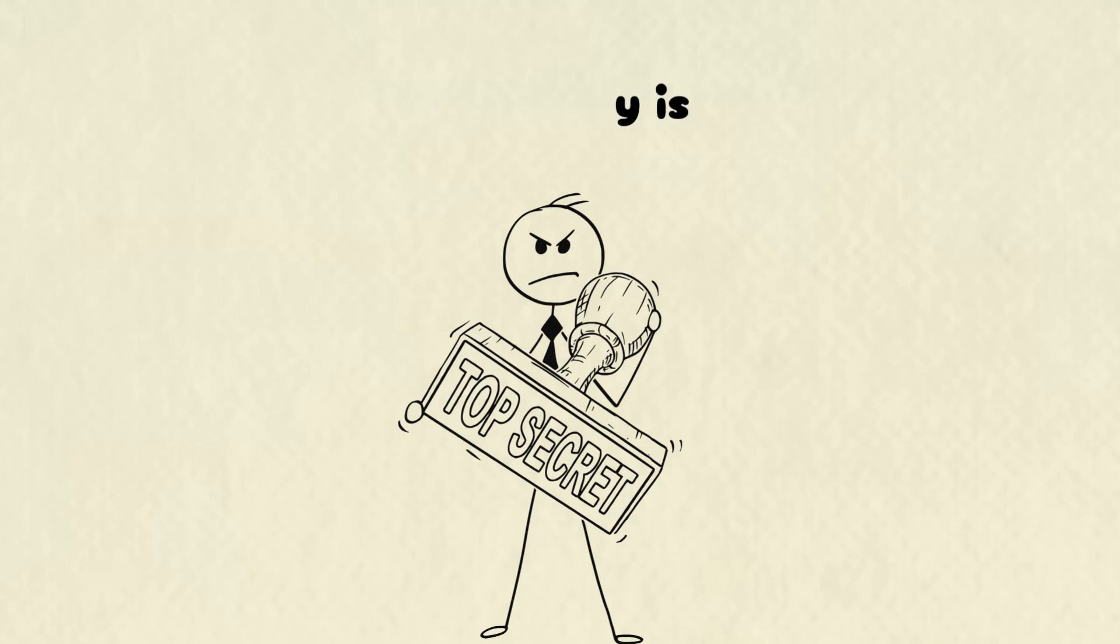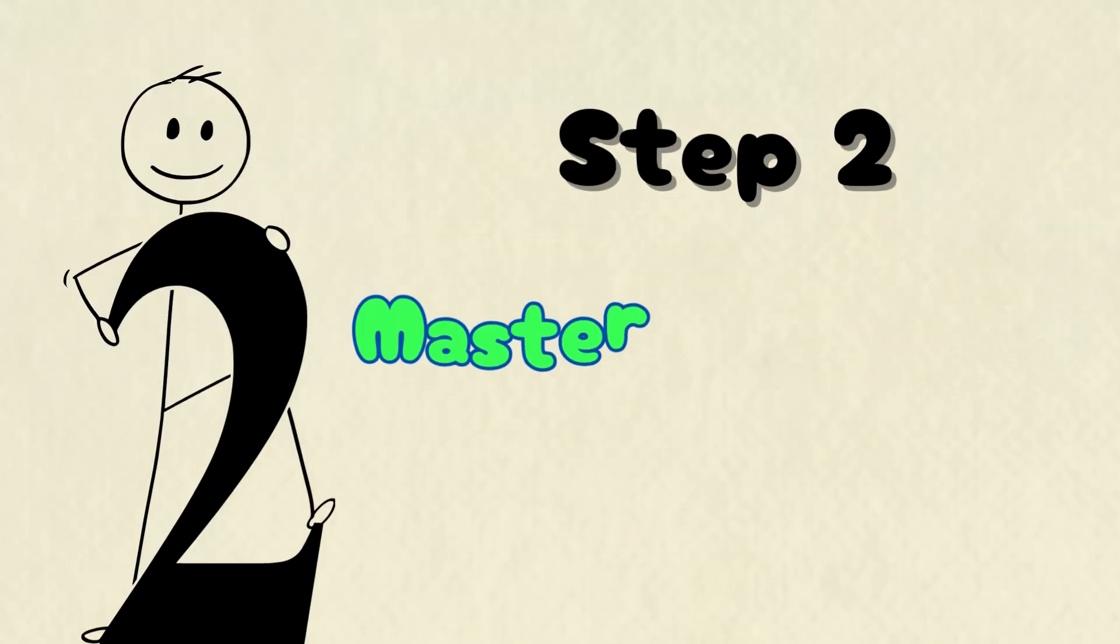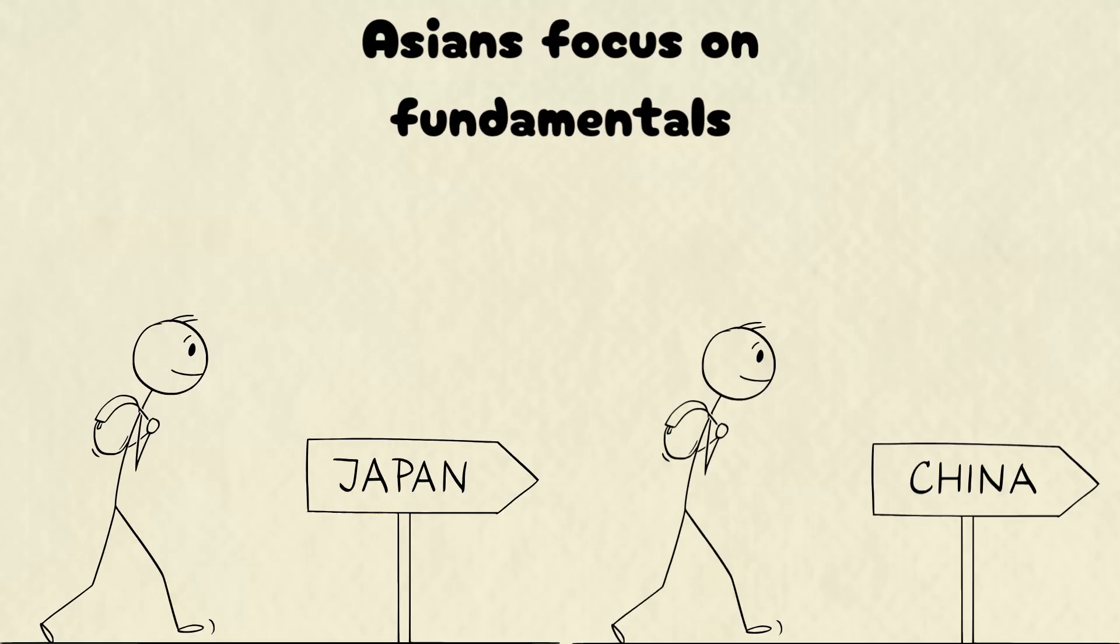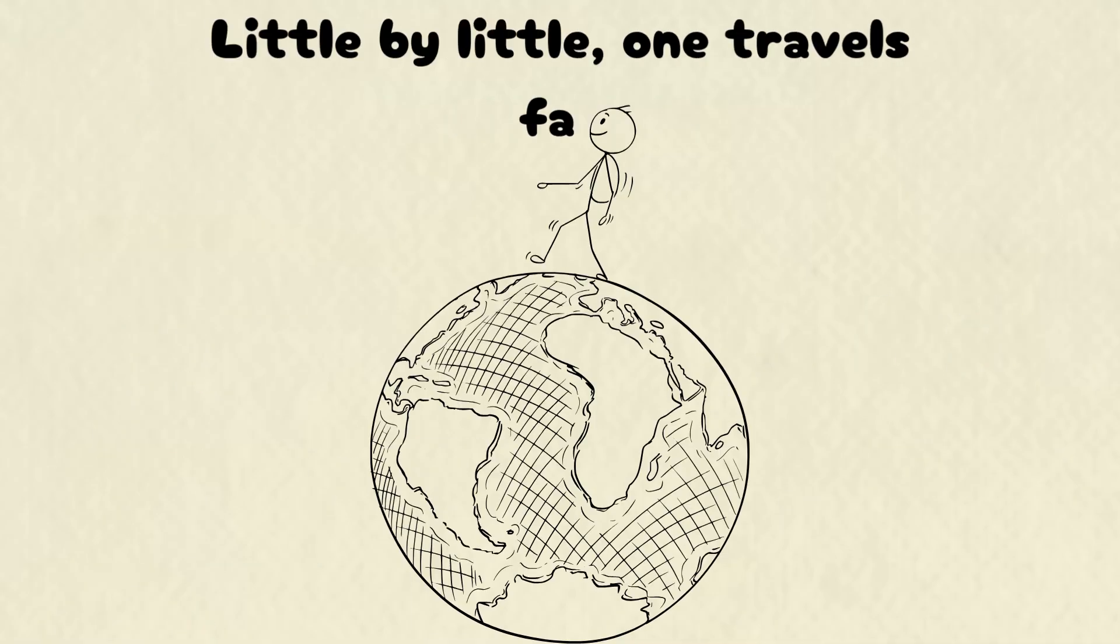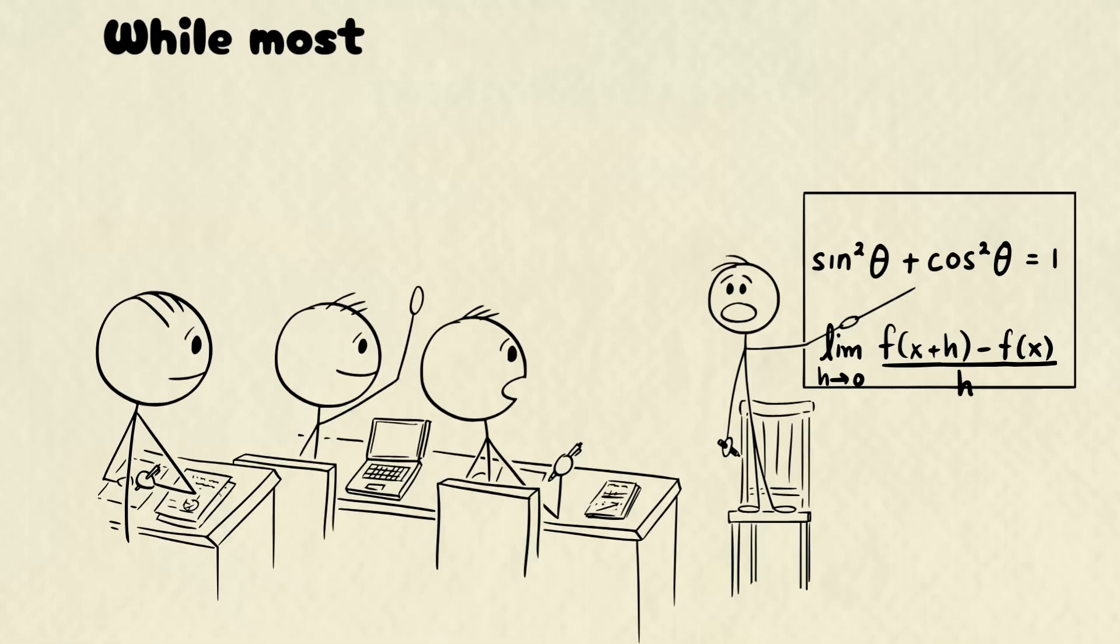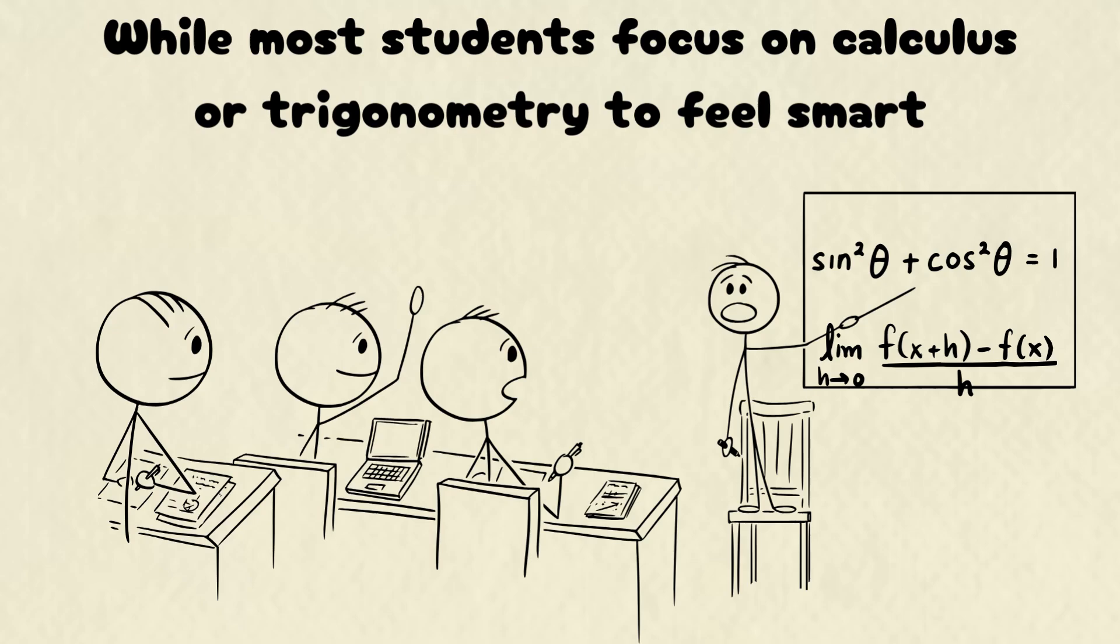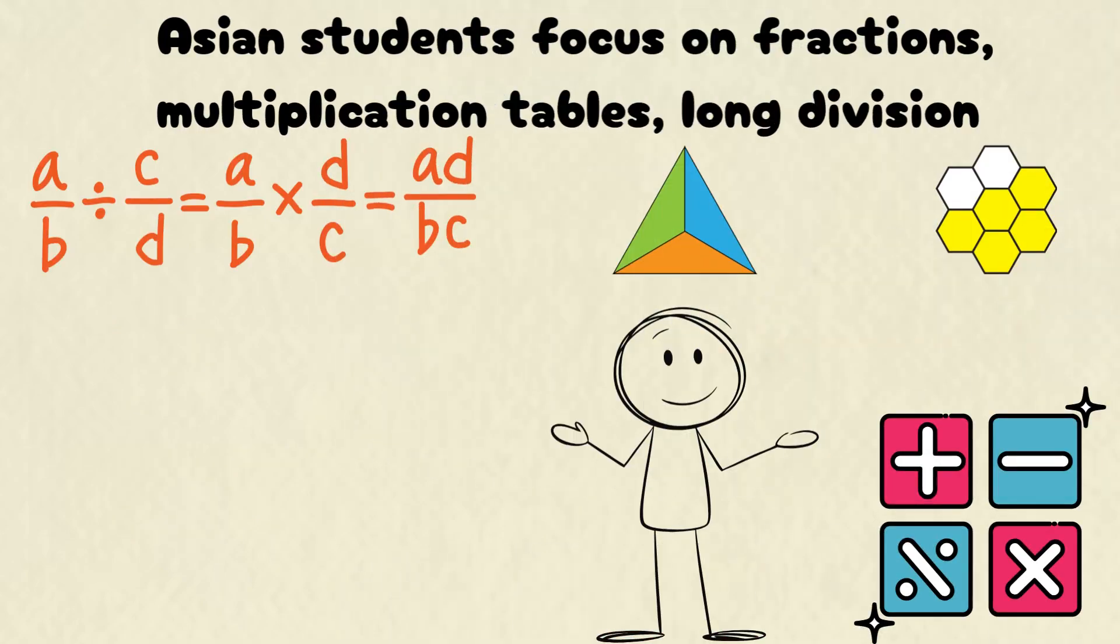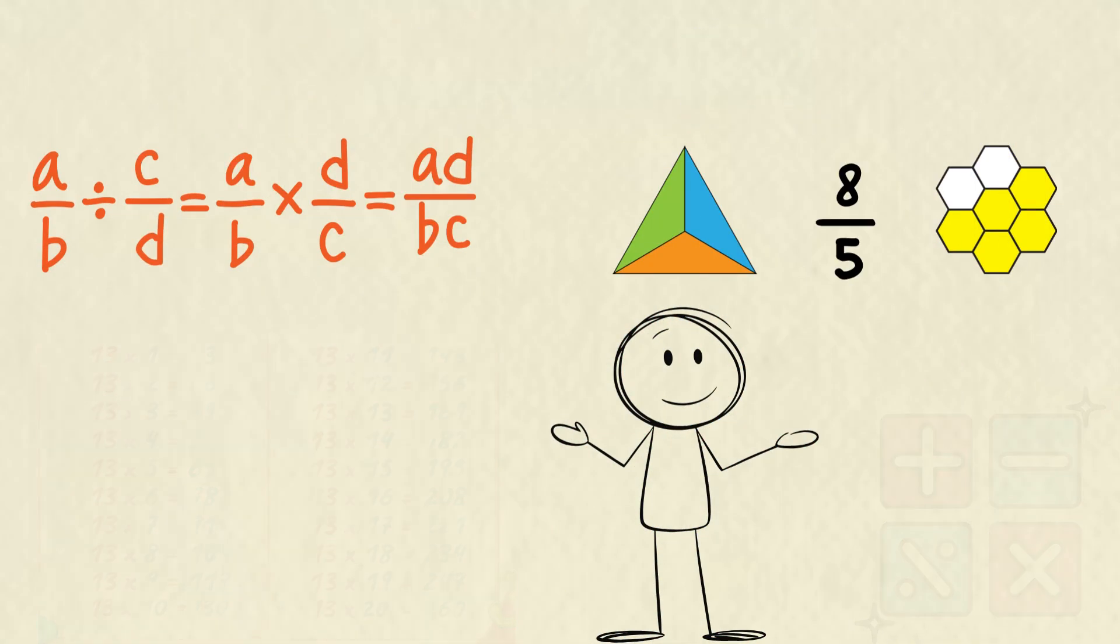The next Asian secret to studying math effectively is step two, master the basics. Build a rock-solid foundation. Asians focus on fundamentals. Little by little, one travels far. Skipping the basics is like building a skyscraper on sand. While most students focus on calculus or trigonometry to feel smart, Asian students focus on fractions, multiplication tables, long division, the fundamentals.